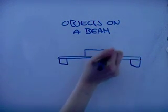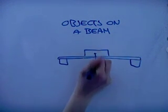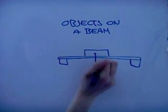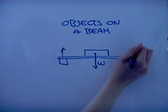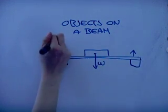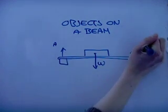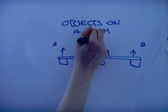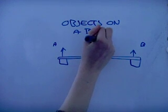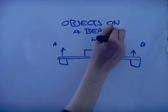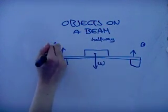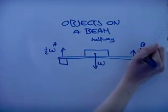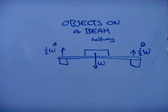Forces on a beam: when a mass is placed on a beam, the upwards forces at the ends of the beam depend on the placement of the mass. For example, if the mass is placed in the middle with a weight of W, then the upwards force at A will be half W and at B the upwards force would be half W as well.